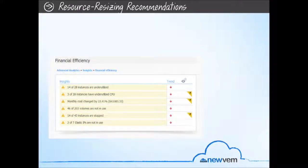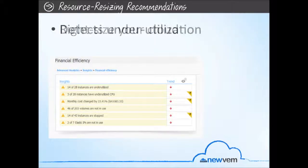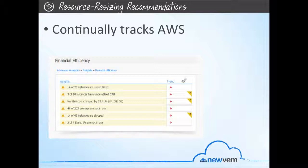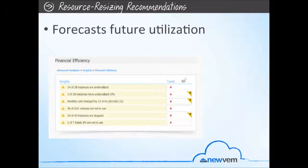With resource resizing recommendations, you can right-size your cloud. NewVim detects underutilized resource capacity and highlights cost reduction opportunities by recommending which oversized machines should be replaced with smaller and lower-priced machines. With its Reserved Instances Lifecycle Management tool, NewVim continuously tracks AWS on-demand instance utilization on a daily, weekly, and monthly basis, and can forecast future utilization, recommending AWS Reserved Instances opportunities. NewVim analyzes the utilization of AWS Reserved Instances and makes recommendations on how to improve utilization or to resell underutilized Reserved Instances on Amazon's AWS Reserved Instances Marketplace.